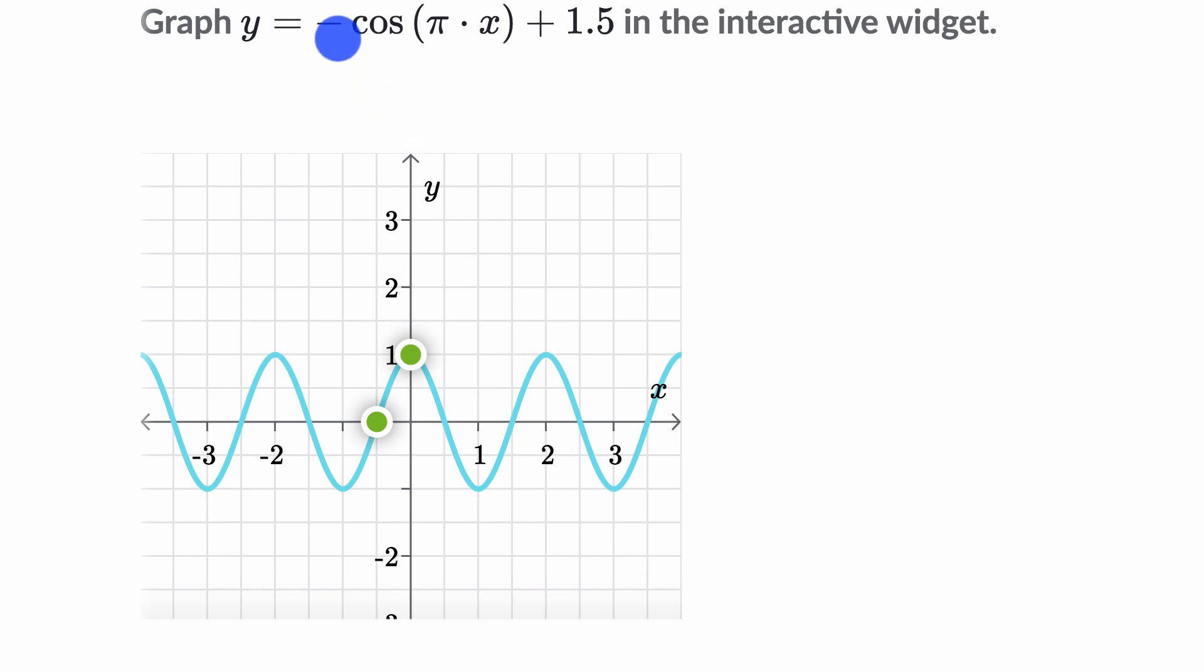Now, what about this negative sign? Well, the negative would essentially flip it around. So instead of whenever we're equaling one, we should be equal to negative one. And every time we're equal to negative one, we should be equal to one. So what I could do is I could just take that and then bring it down here. And there you have it, I flipped it around. So this is the graph of y equals negative cosine of pi x.